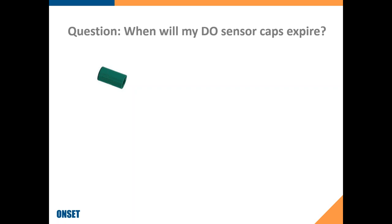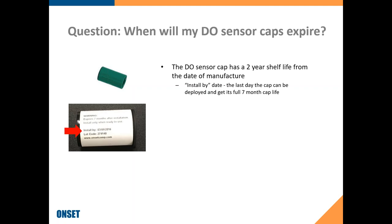Now I want to talk about the DO sensor caps. We get questions about when DO sensor caps expire. The DO sensor caps have a shelf life — you don't want to leave them on the shelf too long. We give the shelf life right in the canister the caps are shipped in; it will say install by a certain date. As long as you install them by that date, you'll get the full seven-month cap life. If you install them a month or two past that date, your cap life will be reduced by that amount.